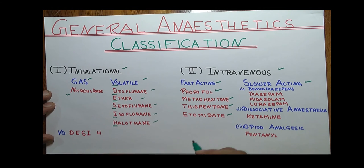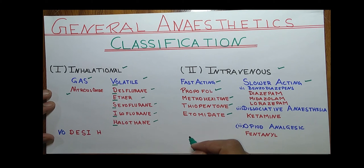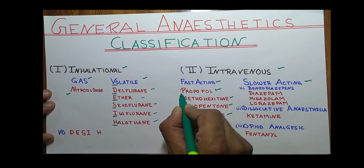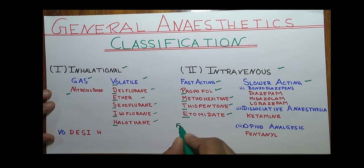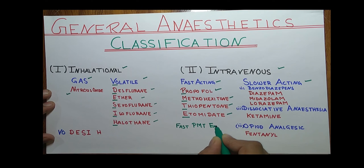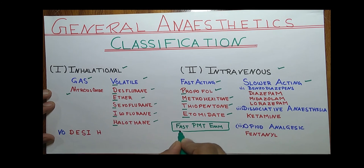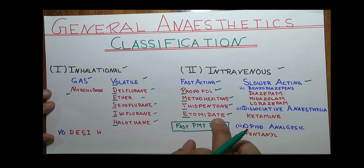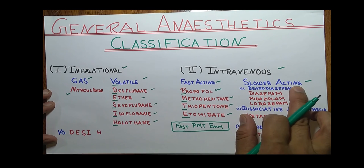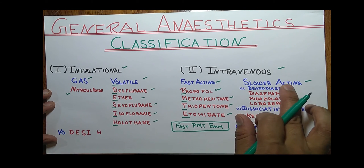To learn these four fast-acting drugs, use the trick 'Fast PMTe': P for propofol, M for methohexitone, T for thiopentone, and E for etomidate. Students, just try to learn with the help of this trick — 'Fast PMTe' — which will make it easy for you to remember the four fast-acting intravenous anesthetics.